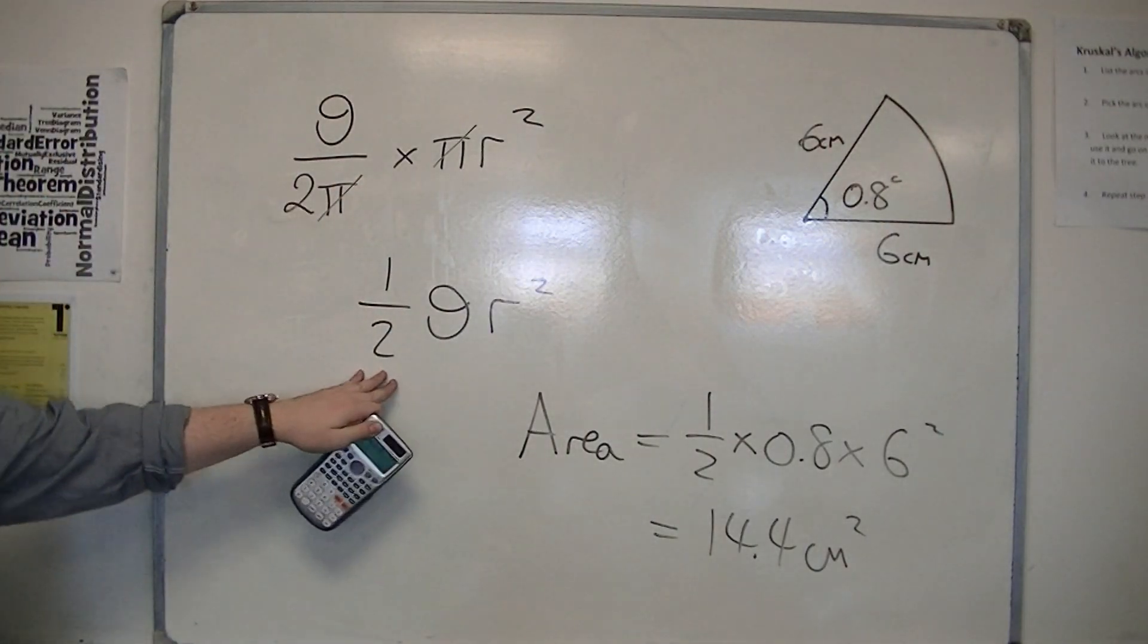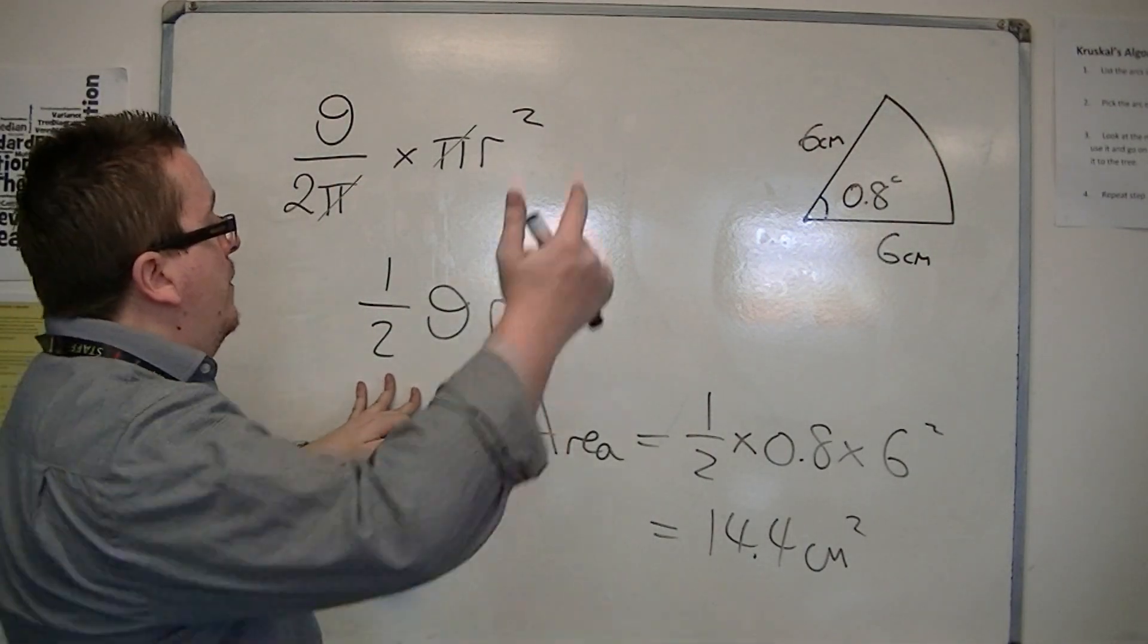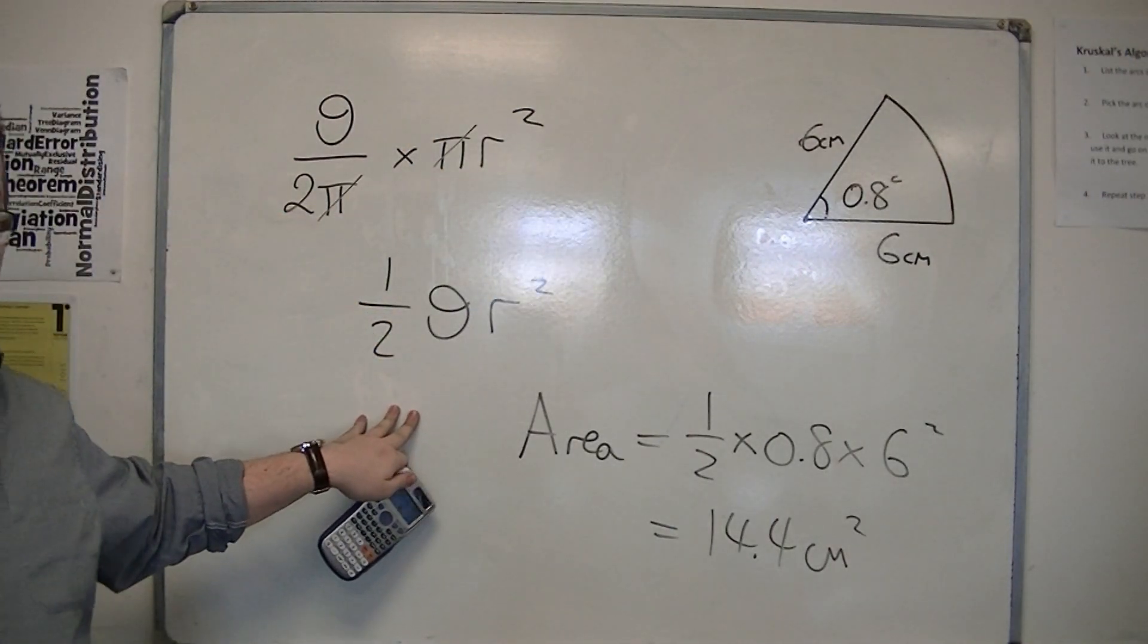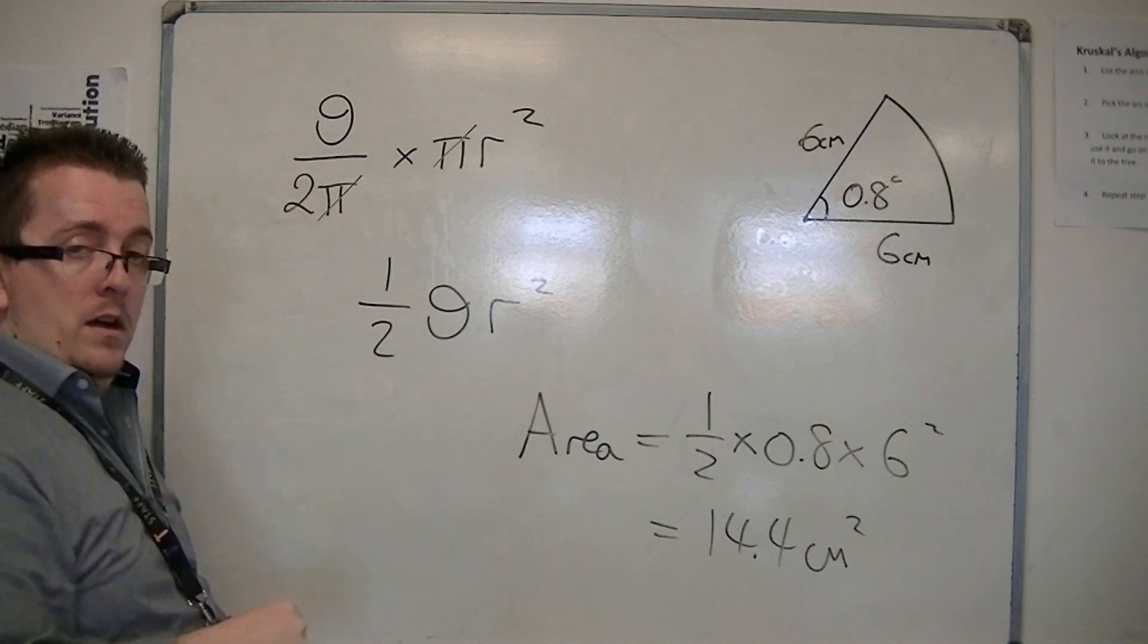So, this is the formula that you need to learn for working out the area of a sector in radians. And in the next video, we're going to be looking at the length of the arc.